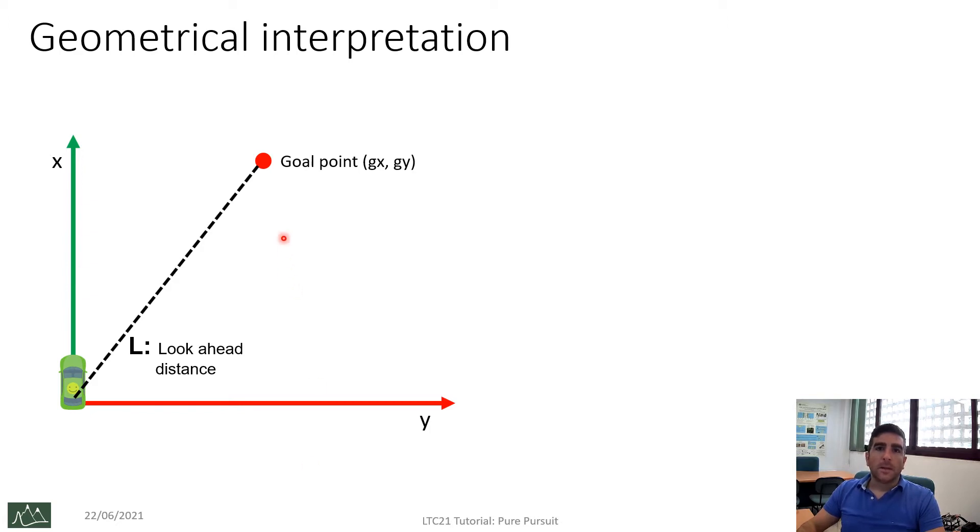So, imagine that your goal waypoint is denoted by GX and GY, and you want the robot to get the goal waypoint following an arc, instead of turning off that direction and going straight. So, we draw an arc, but in fact, this arc is not unique. We can draw other arcs that meet the car and the goal waypoint. So, how do we make it unique?